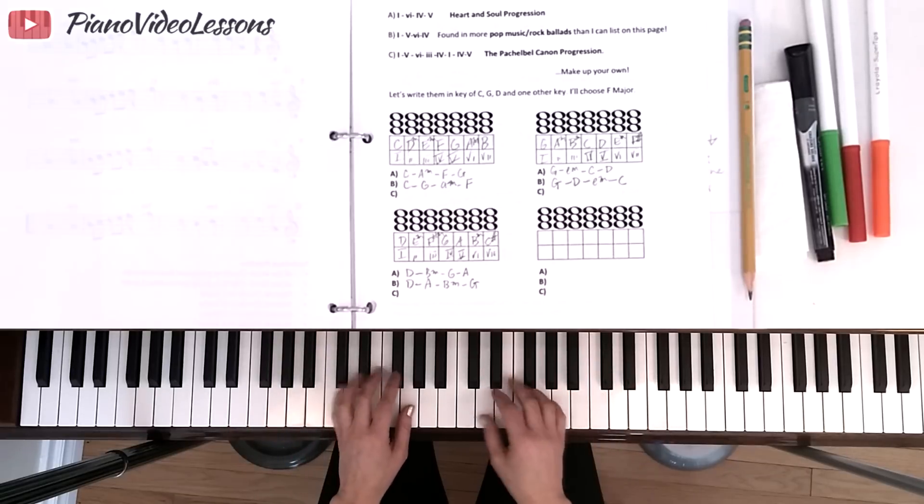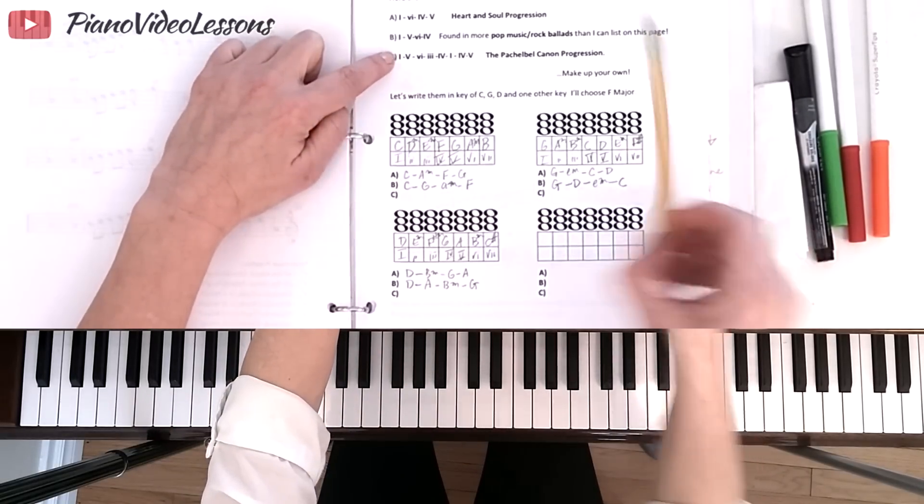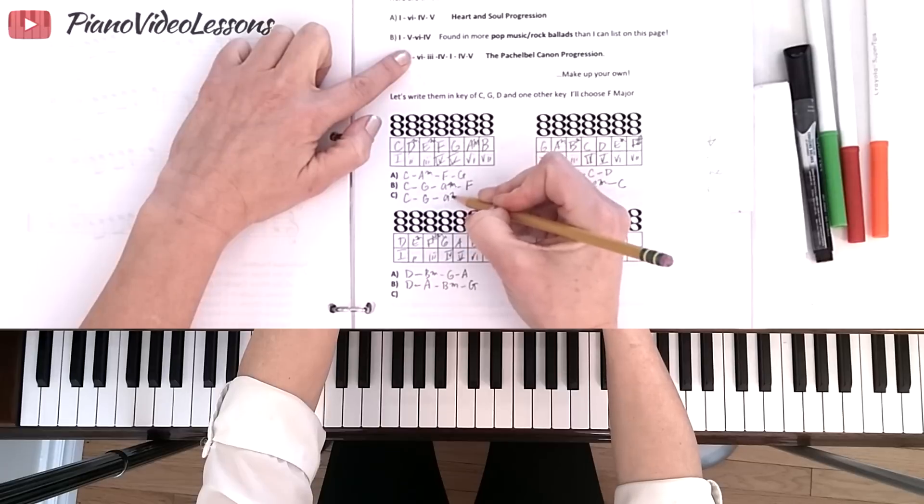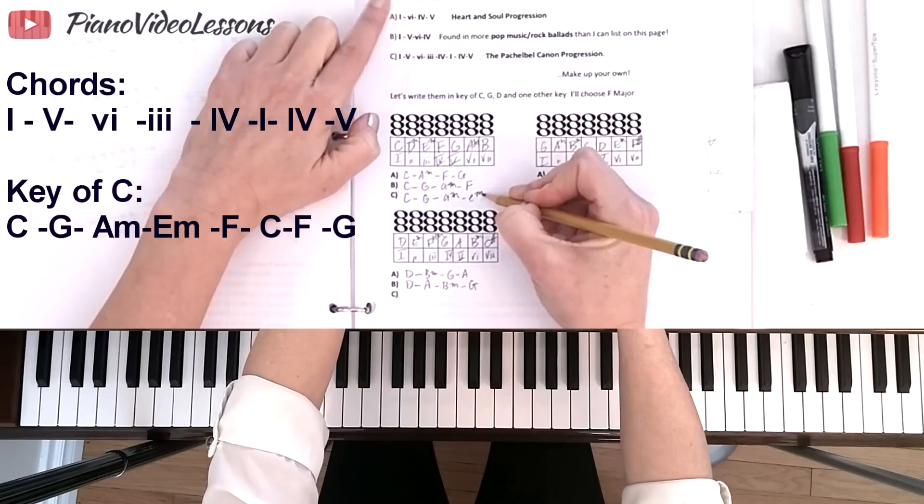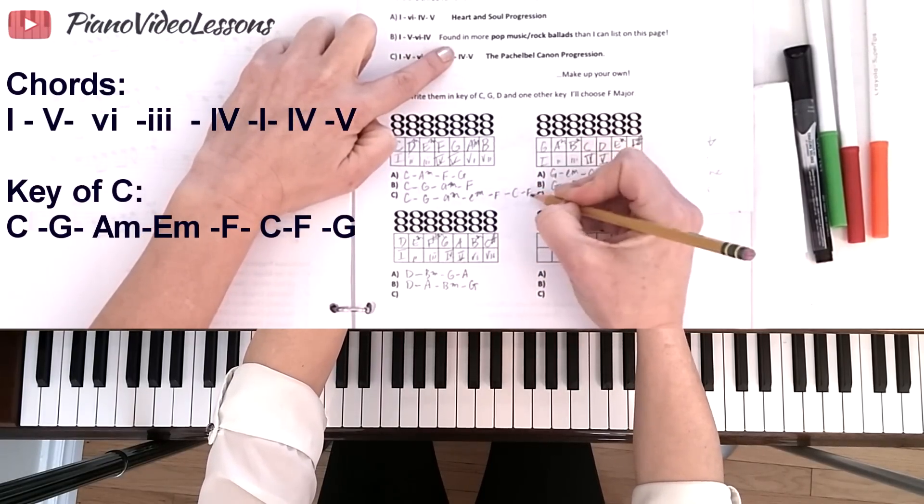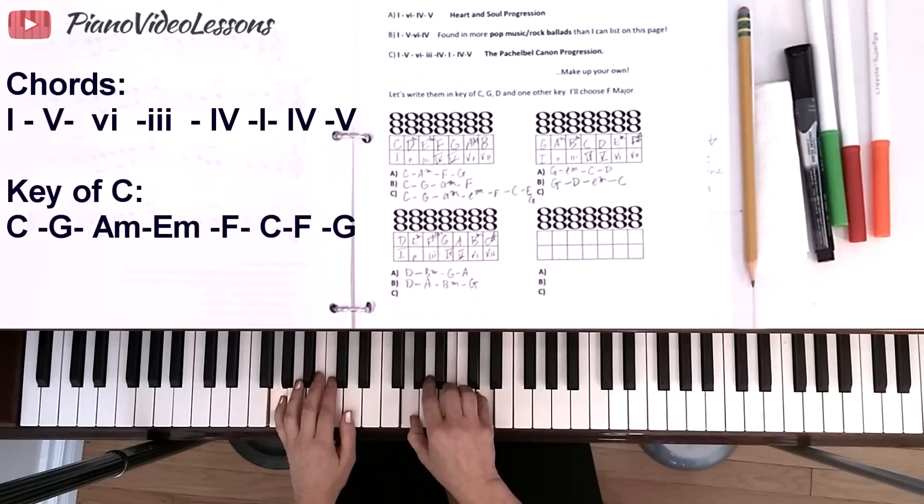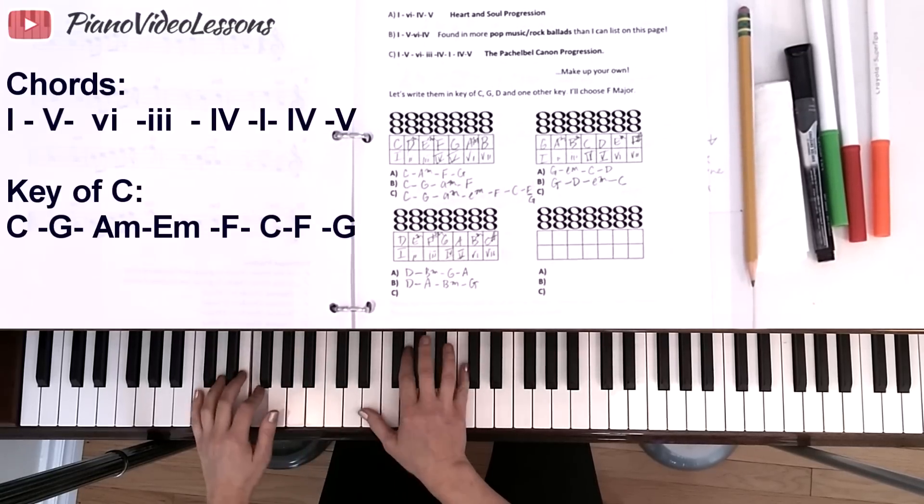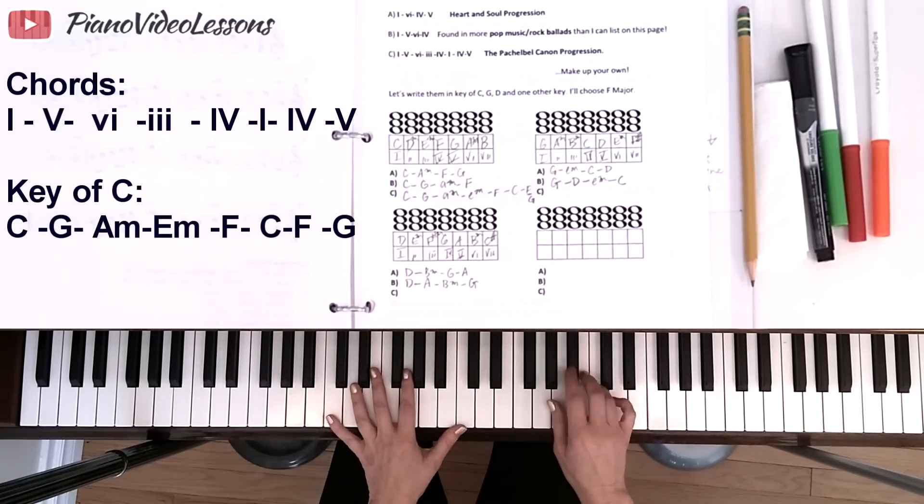Those are all of the keys that we've been studying so far. Let's look at this Pachelbel Canon progression. In this progression, we have a long series of chords. The other two had just four chords. In the Pachelbel Canon progression, we start with the 1 chord, then we go to the 5 chord, then to the 6 chord, then to the 3 chord. This isn't one that we've used yet in these progressions. Back to 4, back to 1, back to 4, and then on to 5. Then this repeats. We're going to have C to G to A minor to E minor to F major to C, back to F, then on to G.